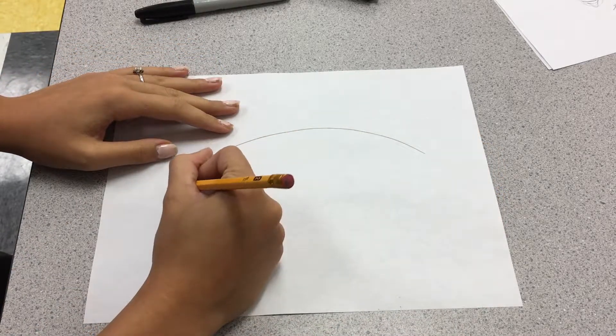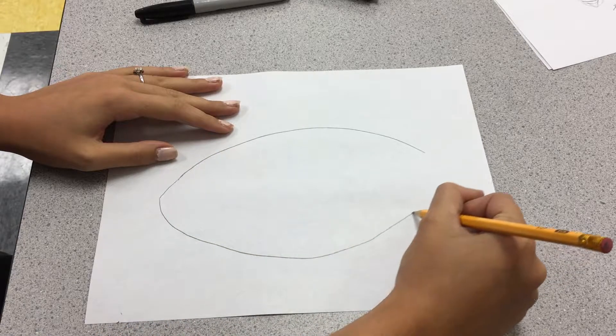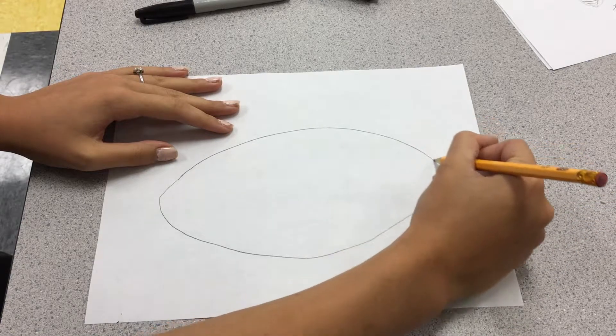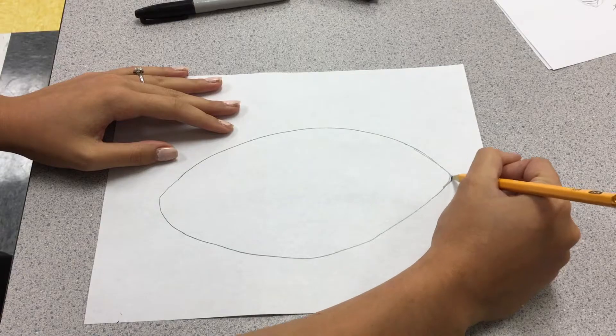And then your eyeball is actually going to be kind of a football or almond shape, not a perfect circle. And then you kind of want it to be a little curved too.